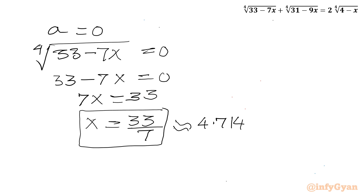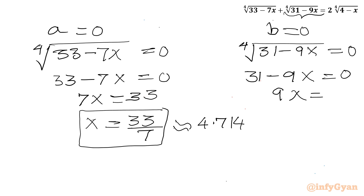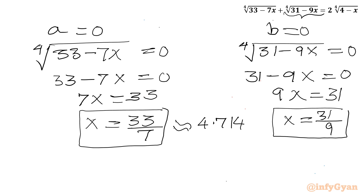Now solving b equals 0: 4th root of (31 minus 9x) equals 0. Raising both sides to the power 4 gives 31 minus 9x equals 0, so 9x equals 31, and x equals 31 over 9. This is our second candidate solution, approximately 3.44.